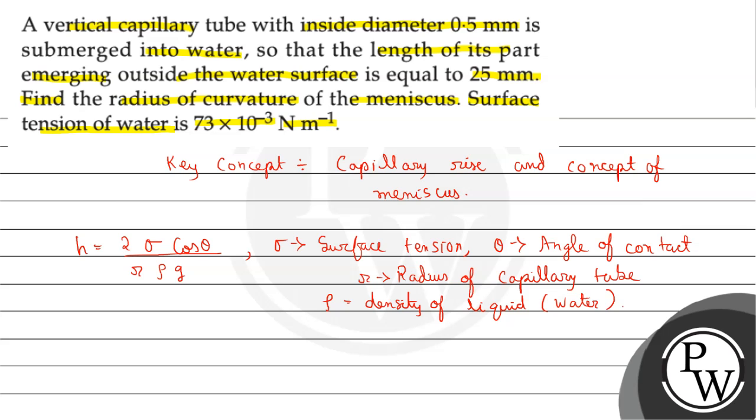Now we have to find which values are given. The surface tension of water sigma is given. The diameter is 0.5 mm, so the radius r equals 0.5 divided by 2, which is 0.25 mm. Converting to meters, we get radius r equal to 0.25 multiplied by 10 to the power minus 3 meter.